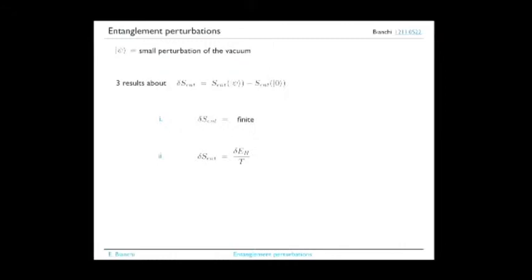Now that you have a finite quantity, you ask what is its physical interpretation. It turns out it has a very clear thermodynamic interpretation: it is given by the energy flux—the amount of energy that crosses the Rindler horizon—divided by a temperature that is the Unruh temperature. So this quantity satisfies a first law, a Clausius relation. Up to this point gravity is frozen—I'm speaking about quantum fields in Minkowski space. But if we unfreeze gravity, and we know how to do perturbative quantum gravity for low-energy perturbations, then when we include the gravitational back reaction, gravity couples universally to everything, and this variation of entanglement entropy turns out to be universal and equal to the change in area of the horizon divided by 4G, where G is now the low-energy infrared one.